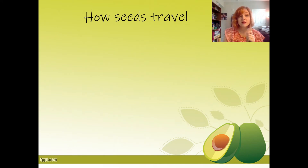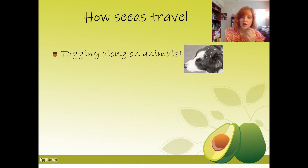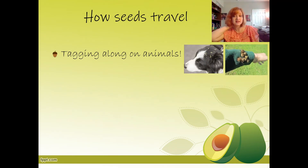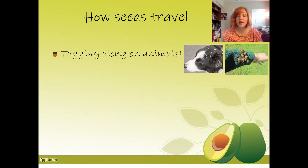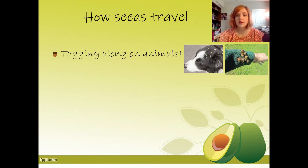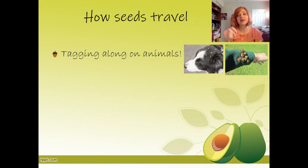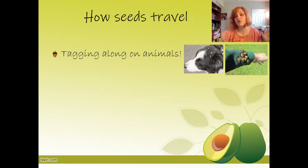One of the first ways seeds travel is by tagging along on animals — which is where you get burrs and things like that. If you have horses, you know about this because horses always find them and get them stuck in their mane. Or on yourself: when you go through the woods you might get them stuck to you. There are smaller seeds with little hooks on them that we can't see with our eyes, but that's why they stick to dog hair or socks. The animal picks up the seed and takes it farther away from the parent plant.